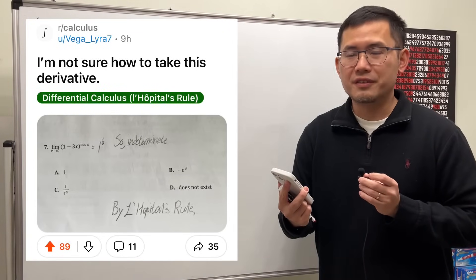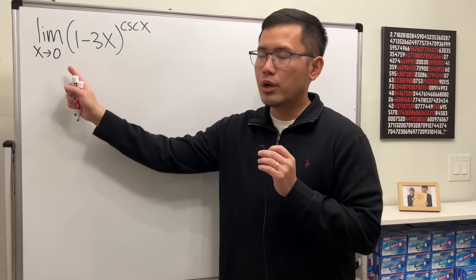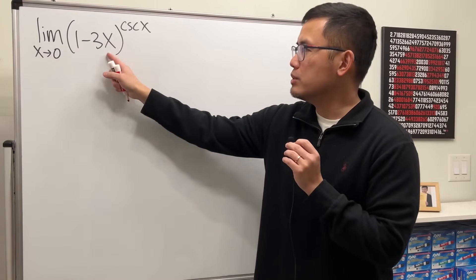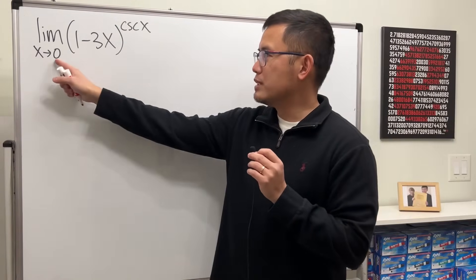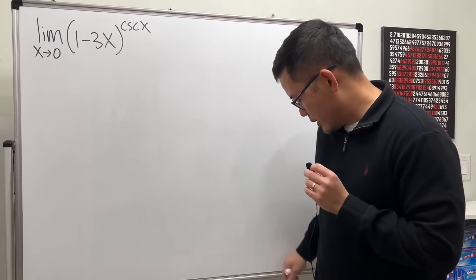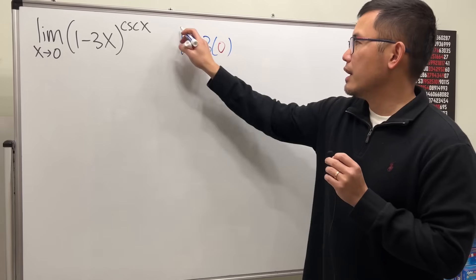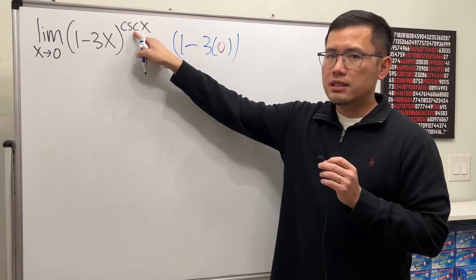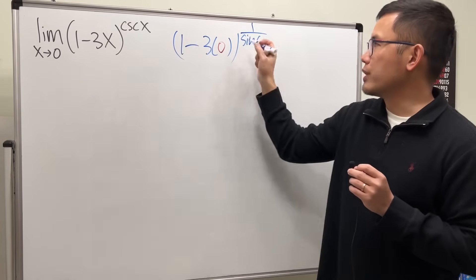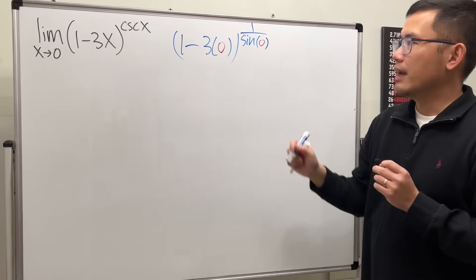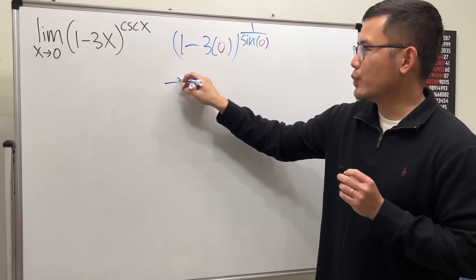Let's take a look — we have the limit as x approaching zero of (1 minus 3x) raised to the cosecant x power. If we put zero into all the x's, the inside becomes 1 minus 3 times 0, and cosecant is the same as 1 over sine, so with zero we get 1 minus 0, which is approaching 1.